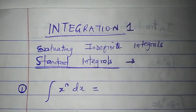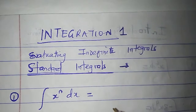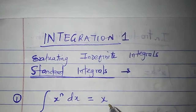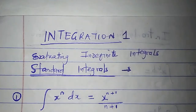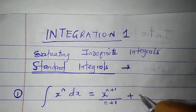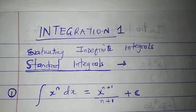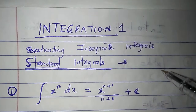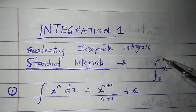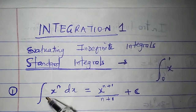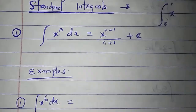This is the first standard integral, or the general integration principle. If I integrate x to the power of n, the rule says it is equal to x to the power of n plus 1, divided by n plus 1. Since the integral is indefinite, I will add a constant. An integral is indefinite when it has no upper and lower limit.